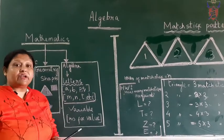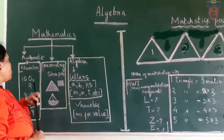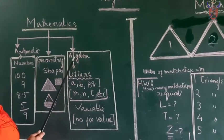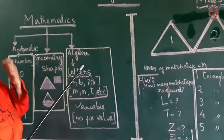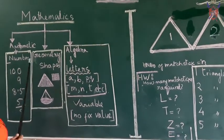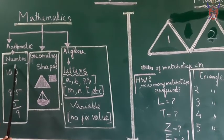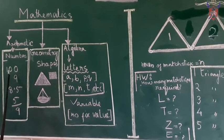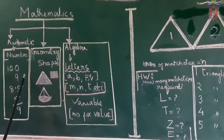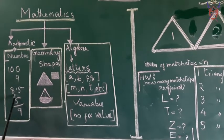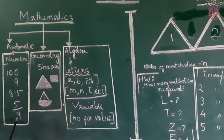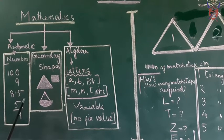We have already gone through so many branches. One is arithmetic, one is geometry, and one is algebra. These three I have written here. Arithmetic is dealing with numbers. Numbers are 10, 20, 100, 9. You can see another number here, 8.5, that is a decimal number. 5 by 9, that is a fraction.